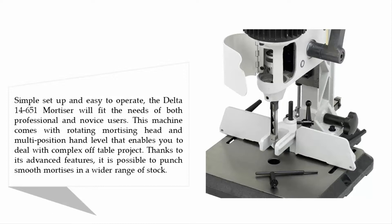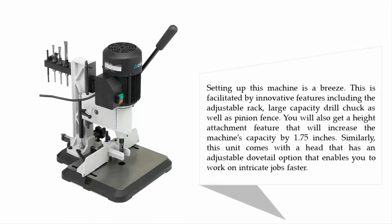Simple setup and easy to operate, the Delta 14-651 mortiser fits the needs of both professional and novice users. This machine comes with a rotating mortising head and multi-position hand lever that enables you to deal with complex off-table projects. Thanks to its advanced features, it is possible to punch smooth mortises in a wider range of stock.